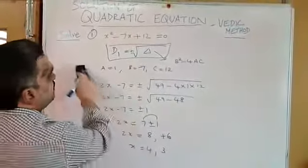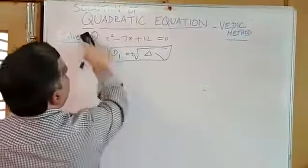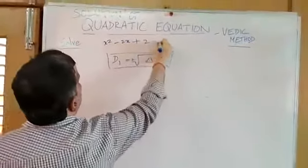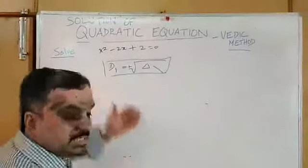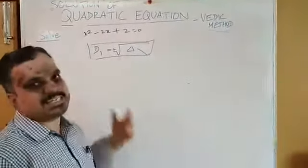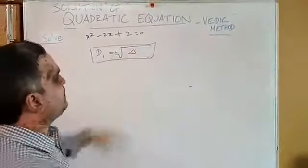Next, we take the next problem. Next problem: solve x squared minus 2x plus 2 is equal to 0. One may solve the complete square method, using formula method, or factorization method. But in this class, we use Vedic method.